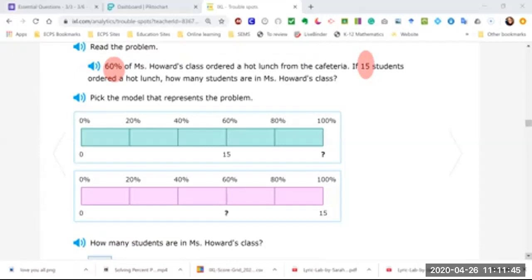So wherever I see 60 percent, and I know that my number should be 15 because that is the part. Now it's asking which model represents the problem.